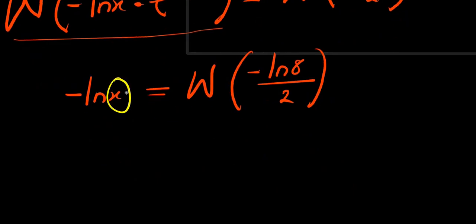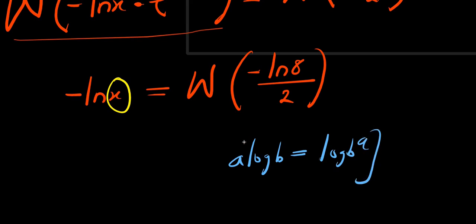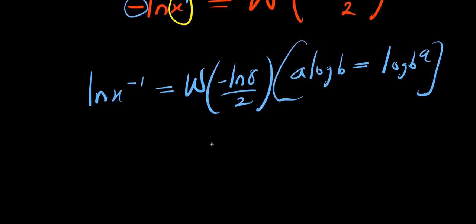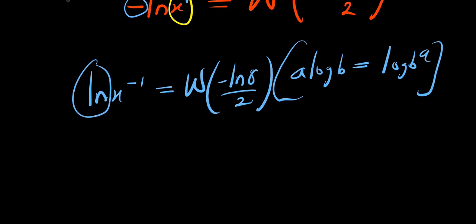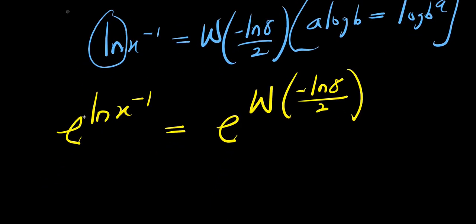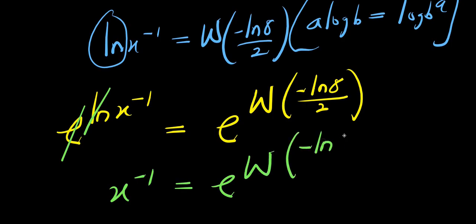Don't forget that we are solving for x. Using the property that a times log b equals log b to the power of a, the negative multiplies the exponent, giving us natural log of x to the power of negative 1 equals the Lambert W function of negative natural log of 8 divided by 2. To eliminate the natural log, we raise e to both sides: e to the power of natural log of x to the power of negative 1 equals e to the Lambert W function of negative natural log of 8 divided by 2. This simplifies to x to the power of negative 1 equals e to the Lambert W function of negative natural log of 8 divided by 2.